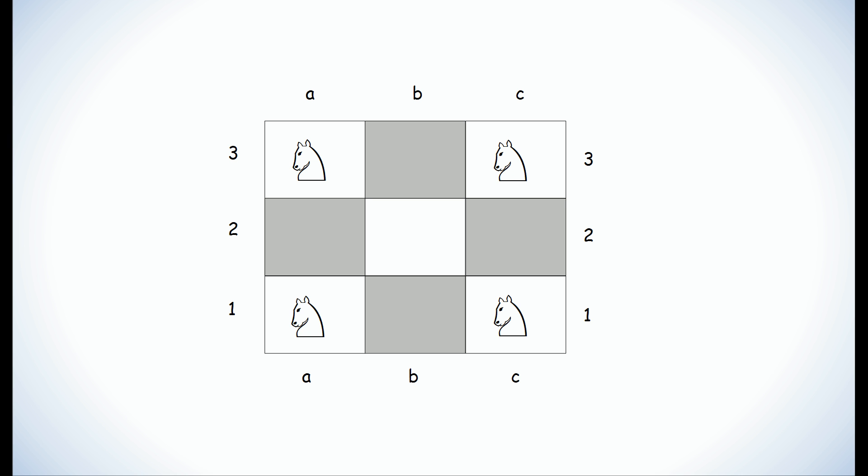They move according to the normal chess rules, which is you can move two spots over and one up or two spots up and one over. The goal in this puzzle is only by using legal chess moves can you get the knights in the opposite corners to swap positions.